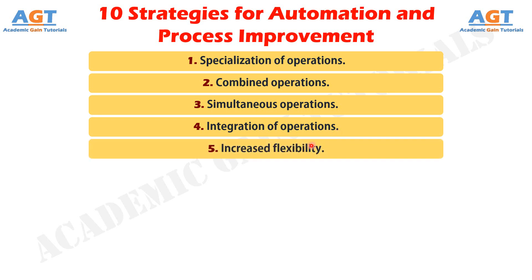Strategy No. 5: Increased Flexibility. This strategy attempts to achieve maximum utilization of equipment for job shop and medium volume situations by using the same equipment for a variety of parts or products. It involves the use of programmable or flexible automation. Prime objectives are to reduce set-up time and programming time for the production machine, which normally translates into lower manufacturing lead time and less work in process.